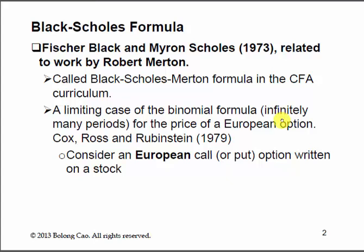We will start to talk about the Black-Scholes formula. Fisher Black and Myron Scholes wrote their paper in 1973 and developed this formula, which is also related to the work by Robert Merton. We have lost Fisher Black, but both Scholes and Merton are still with us. In our CFA curriculum, this formula is called the Black-Scholes-Merton formula — that's the full name you will see when you study the CFA curriculum.